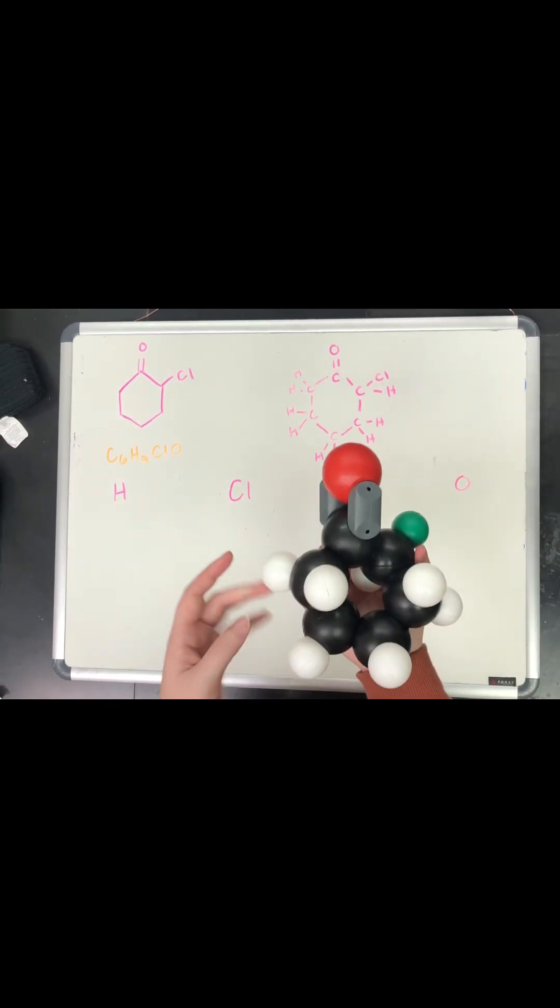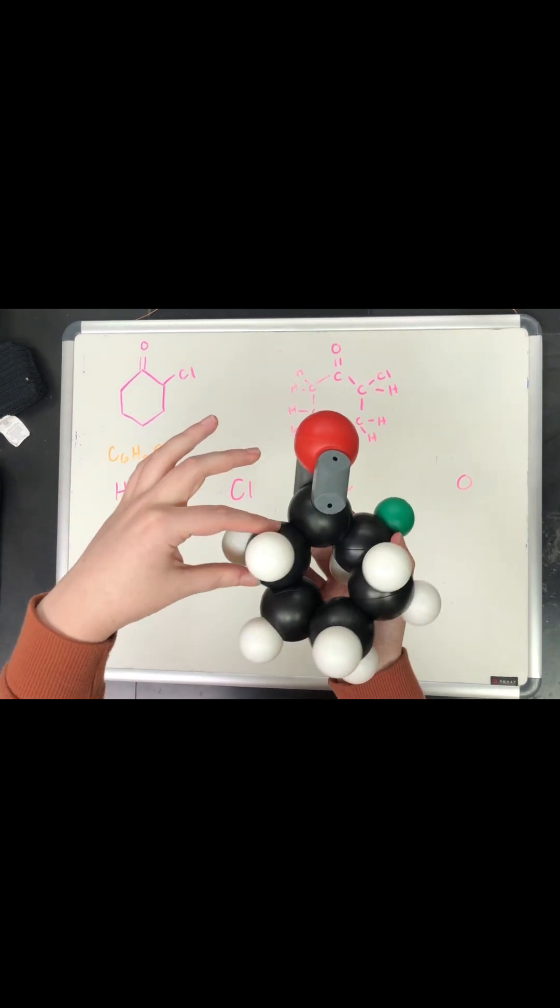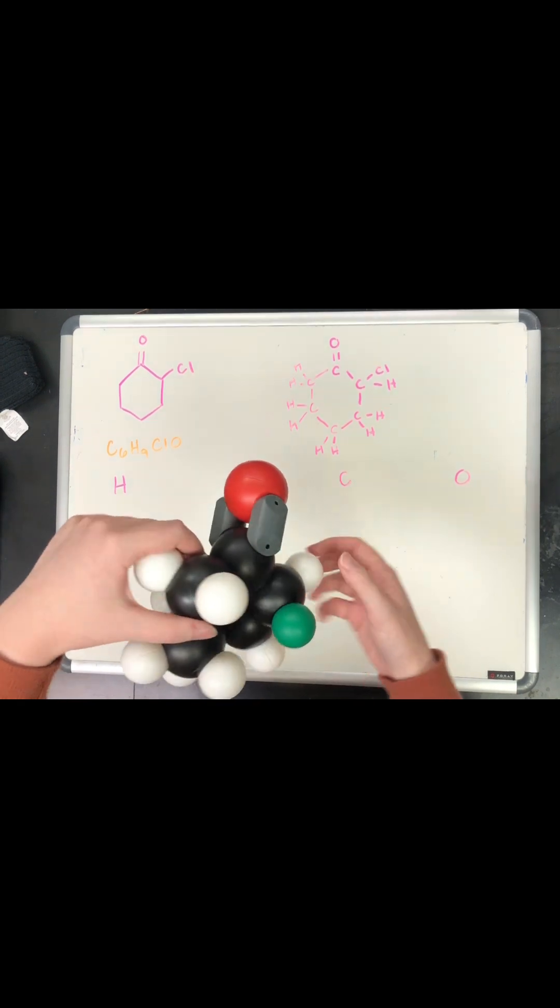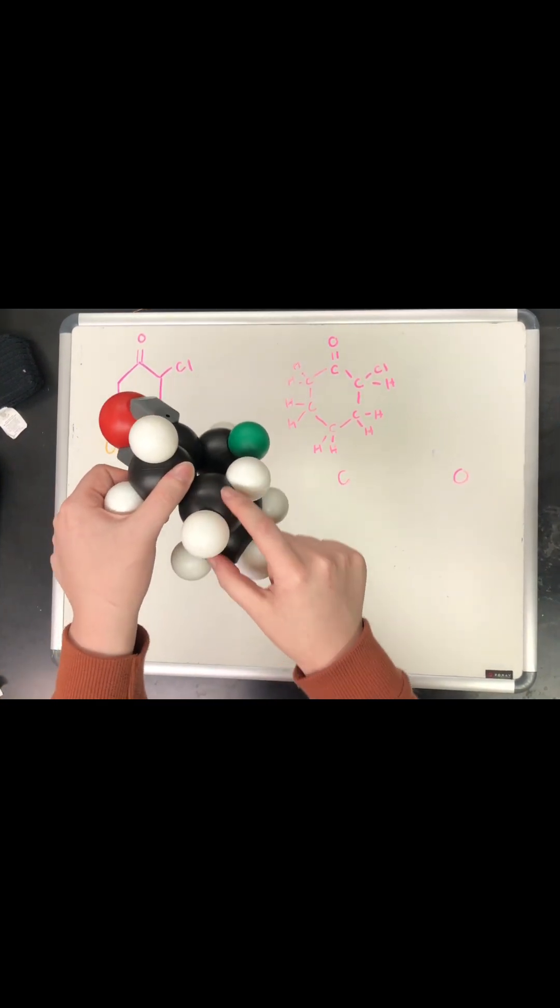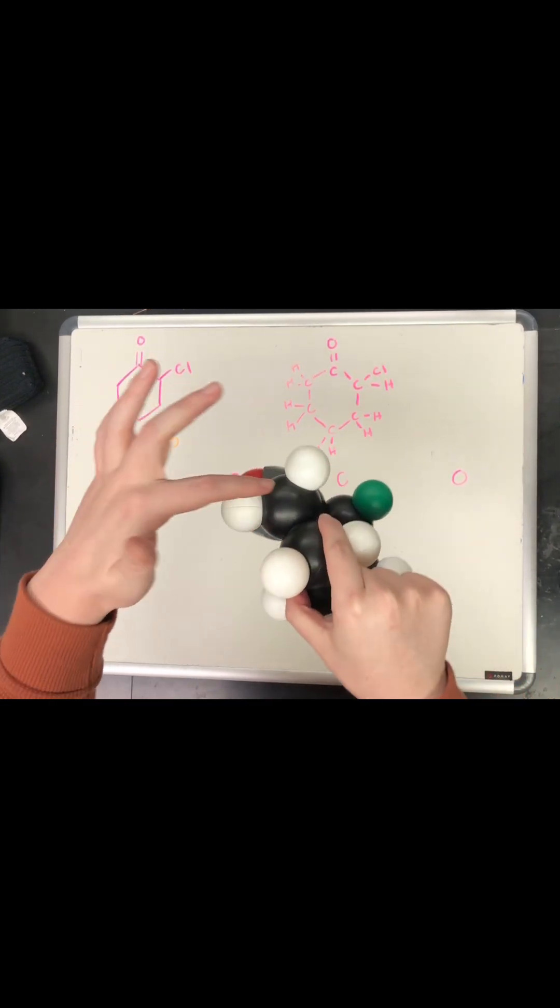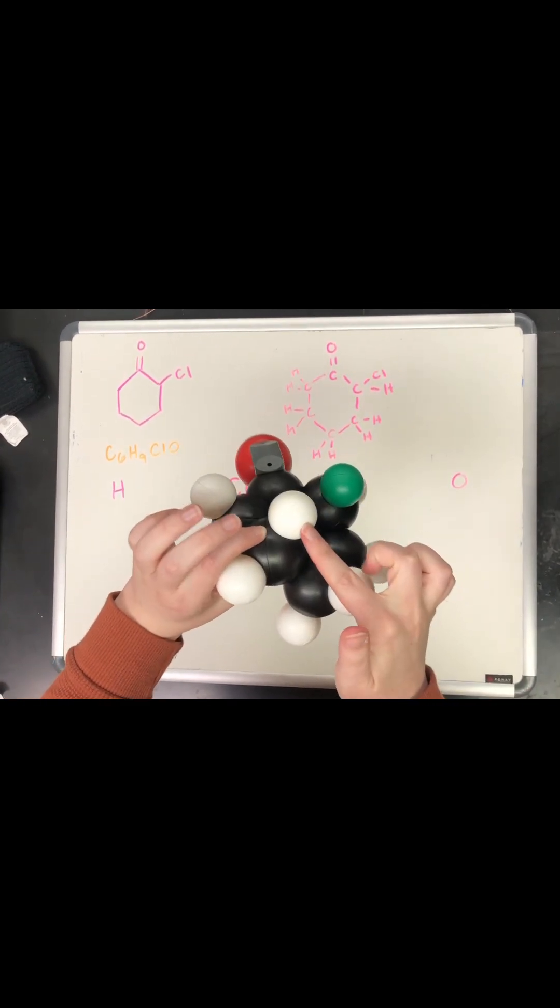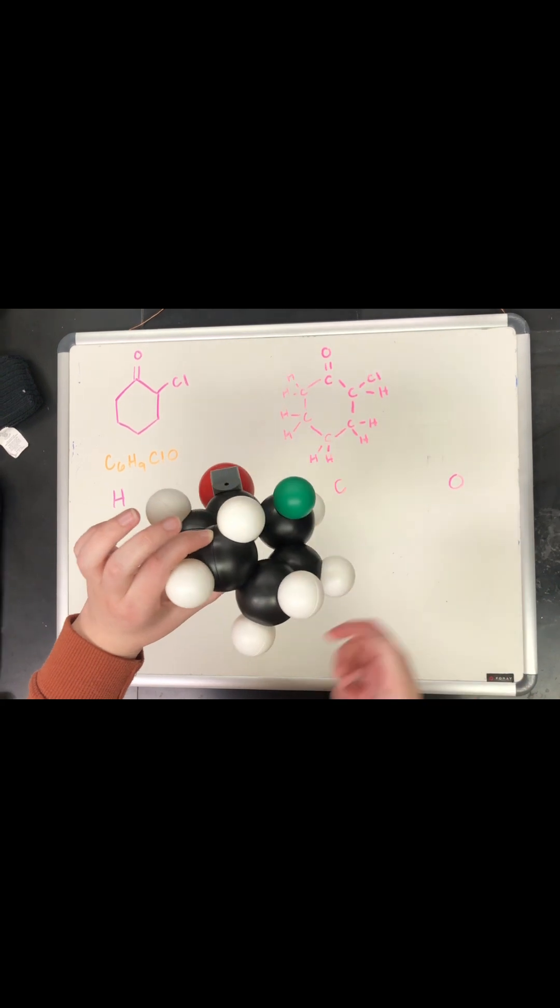We have four bonds attached to every carbon, which is what they need. For example, on this one, this one carbon here has the carbon here, the carbon here, the hydrogen here, and the hydrogen over here to fulfill its four-bond requirement.